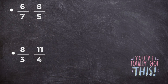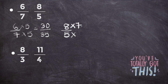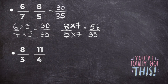Next question: find equivalent fractions for six upon seven and eight upon five. For the first fraction, six upon seven, multiply both numerator and denominator by the denominator of the other fraction, which is five — giving thirty upon thirty-five. For the second fraction, eight upon five, multiply by the denominator of the other fraction, which is seven — giving fifty-six upon thirty-five. So the two equivalent fractions of six upon seven and eight upon five are thirty upon thirty-five and fifty-six upon thirty-five.